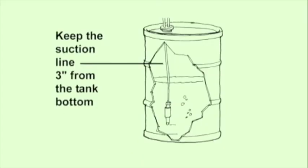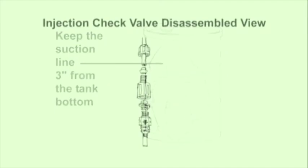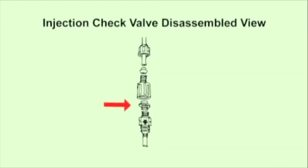The suction line should be three inches from the bottom of the solution tank to prevent picking up sediment. Sediment pulled through the suction line from the tank bottom can damage the pump tube and cause blockage or restriction in the check valve duct bill.